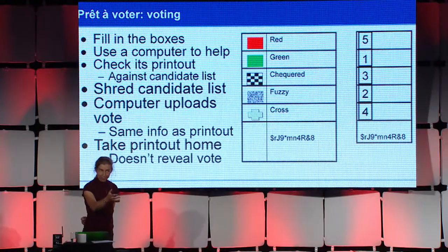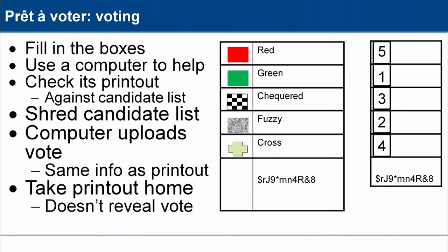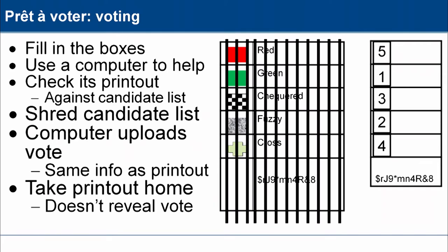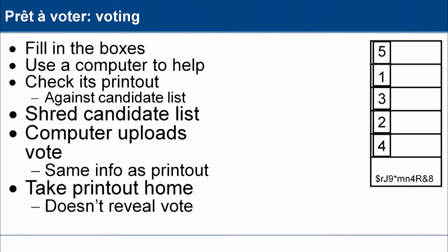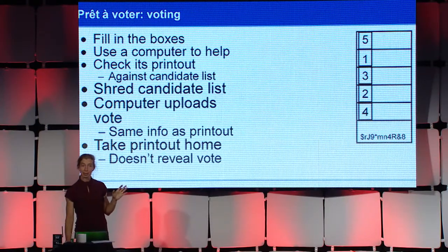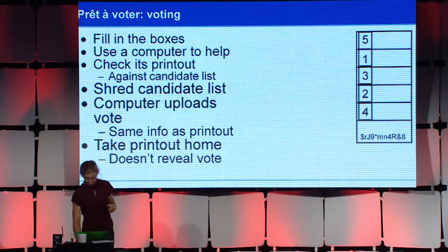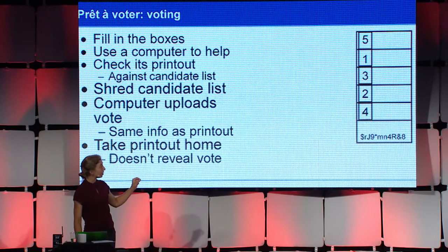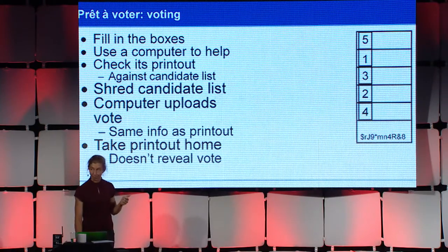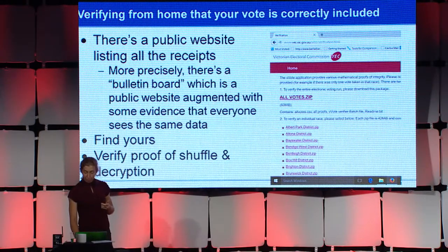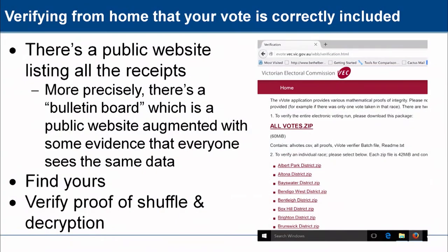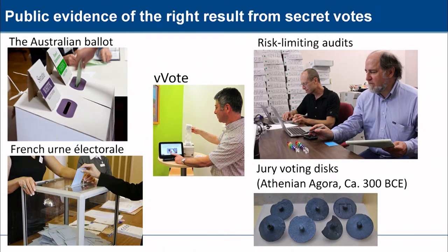Once you've challenged some ballots, taken one that you're happy enough to vote on, filled in some preferences, and carefully checked that the numbers you wanted to cast line up with the candidates you wanted to vote for, you shred the list of candidate names in the polling place before you walk out. You take home a printout, which is a schematic of that complicated-looking photograph. The crucial thing about this is it doesn't reveal how you voted, because you can't recover the order of the candidates from it. Then you go home and check the giant list of included votes to look for your own, and if you're a real geek, you write your own verifier for the fancy crypto mixing and shuffling proofs.